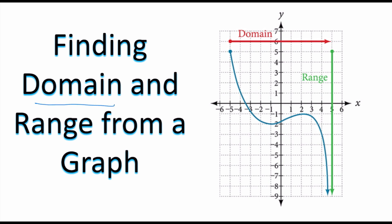The domain are all of the possible x-values that the graph takes on — those are the set of inputs. The range are basically all of the y-coordinates or y-values the graph takes on — those are the outputs. When we look for domain on the graph, we're talking about what is happening along the x-axis, reading from left to right, because numbers get bigger from left to right.